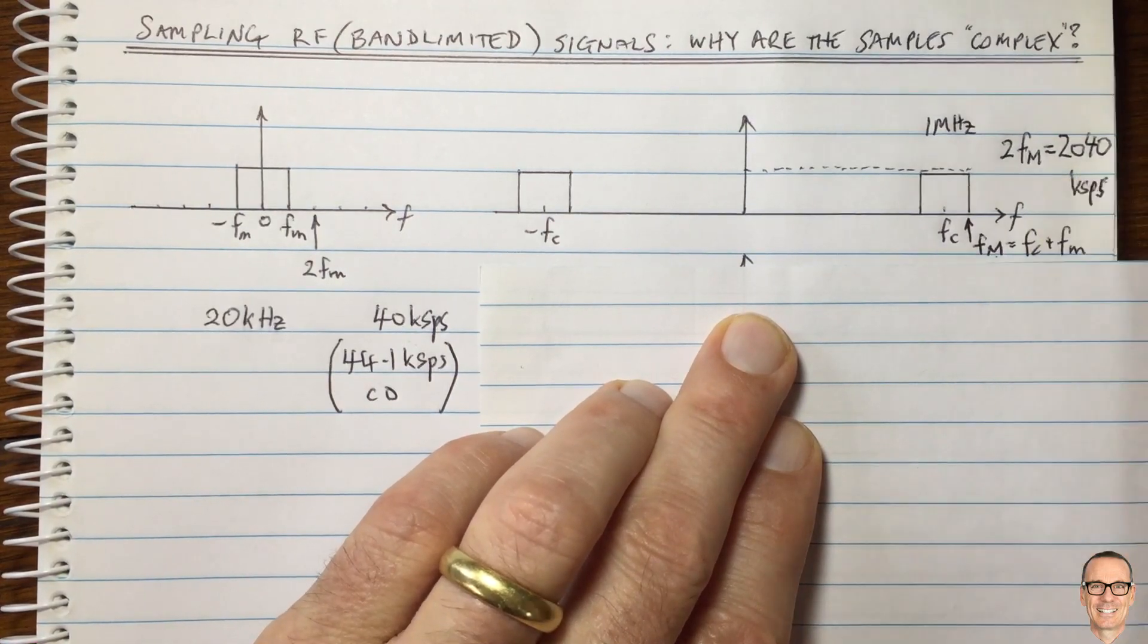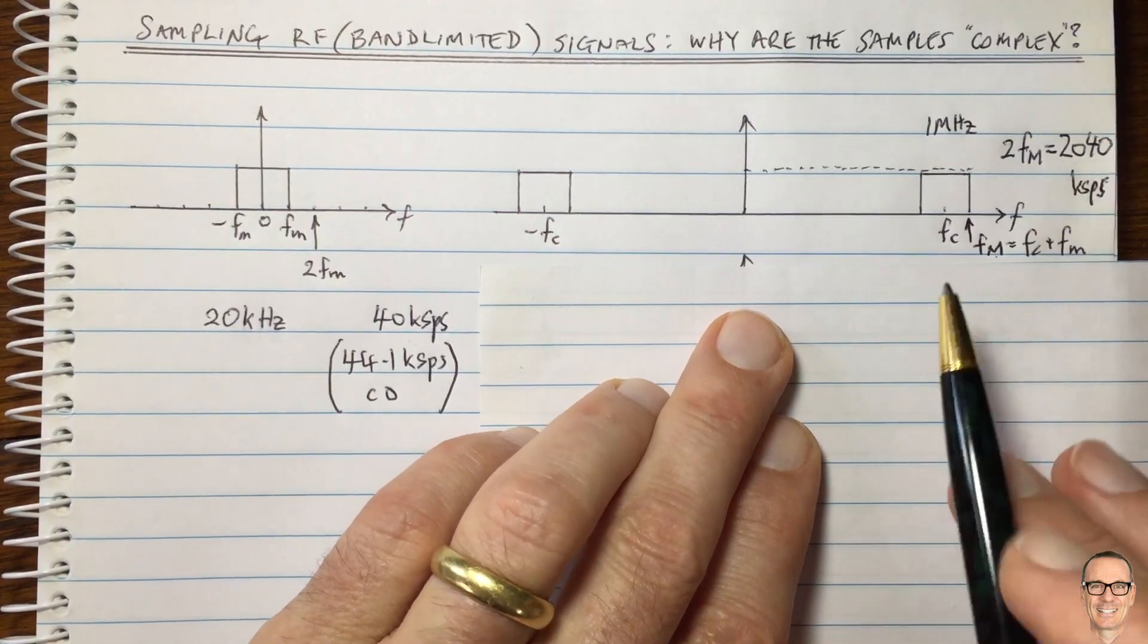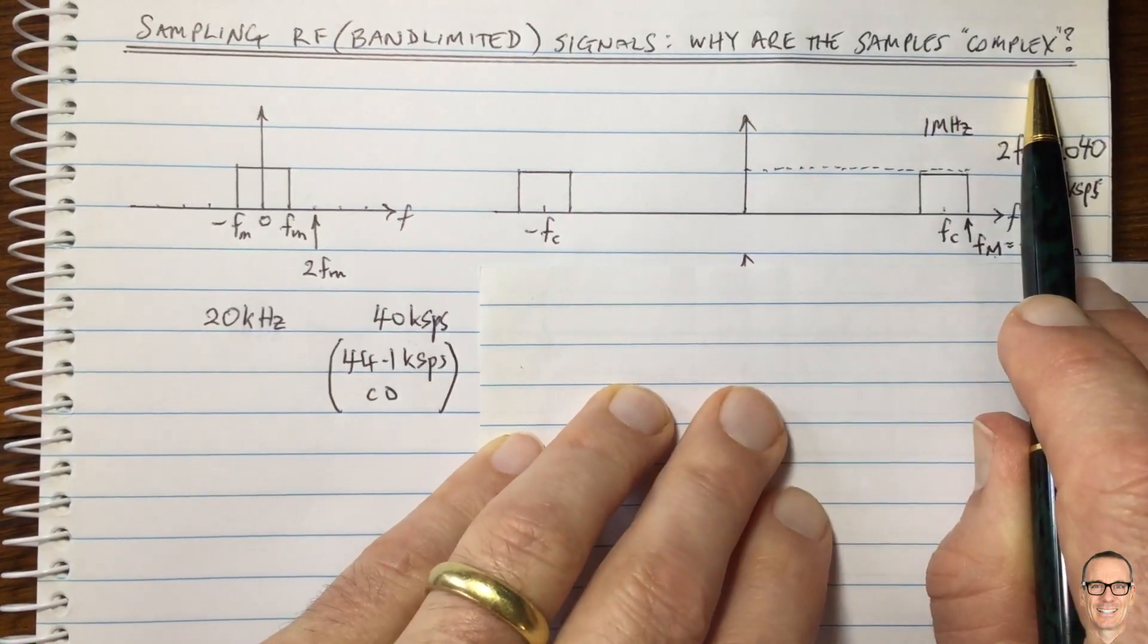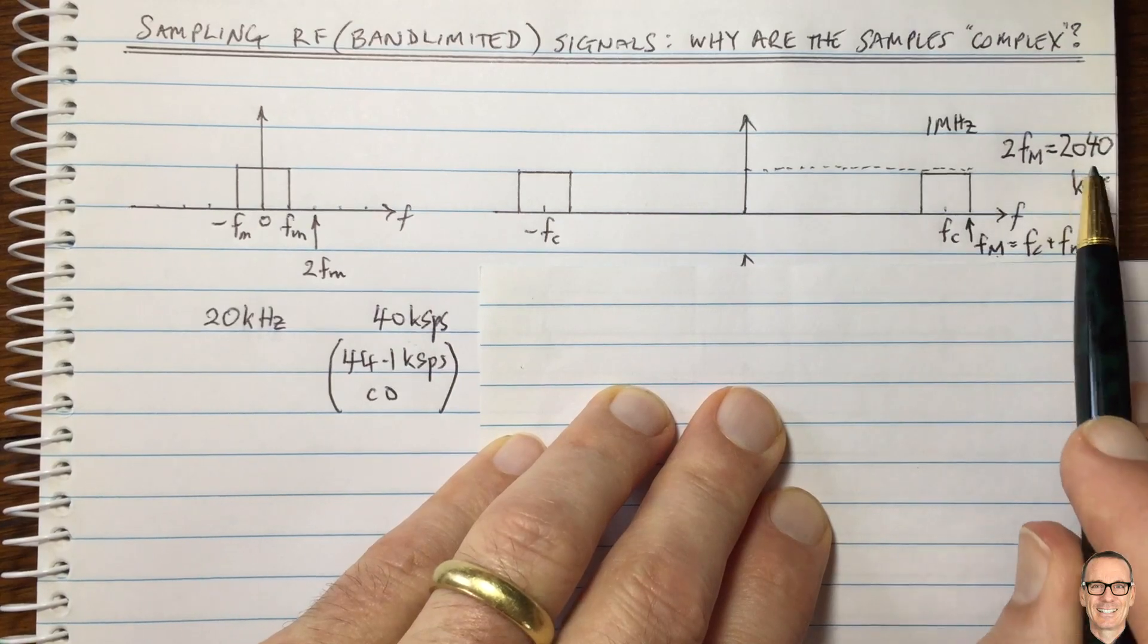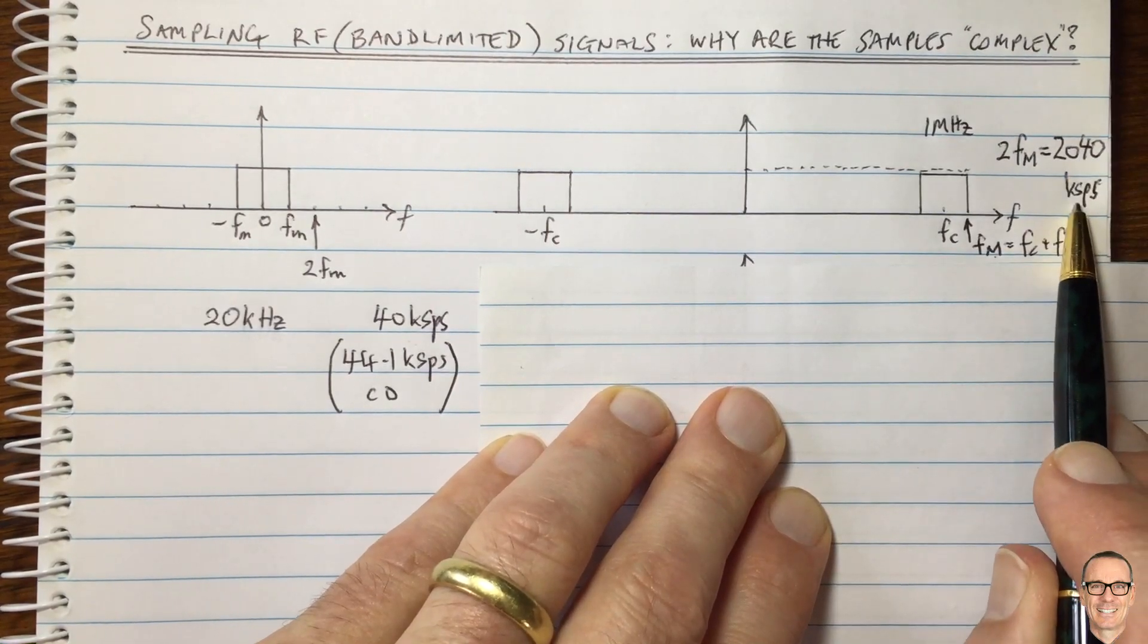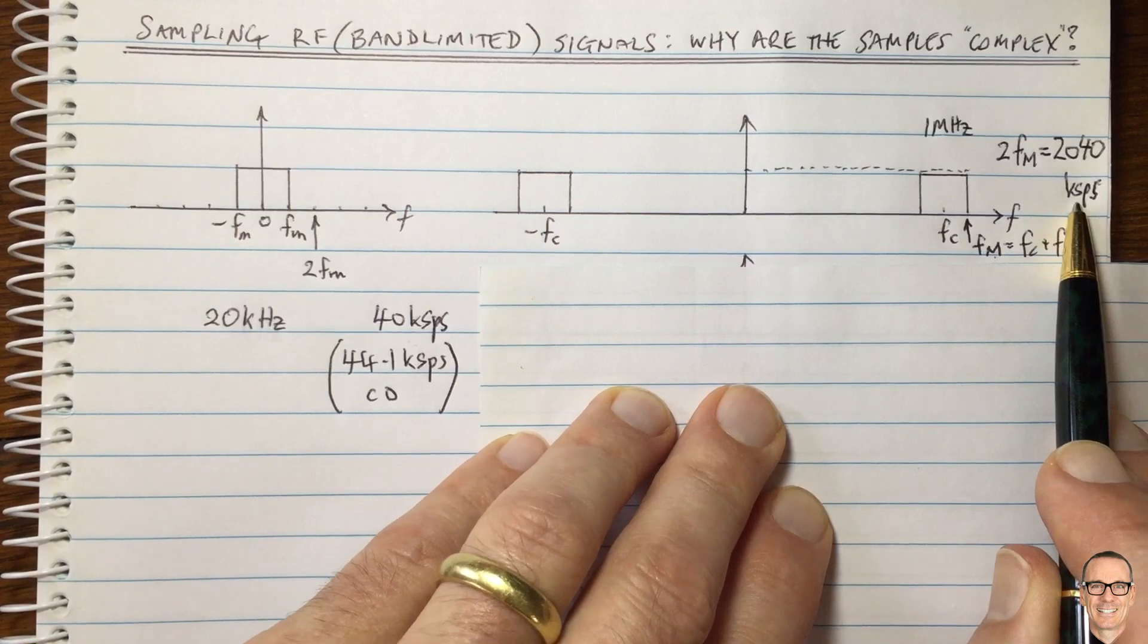So instead of doing that, we take a different approach. And this is where we come back to this question about why the samples are complex. If we did it at that rate, they would be real valued samples, but very high rate, therefore a lot of samples per second for us to process digitally.